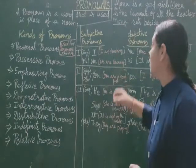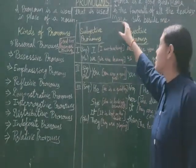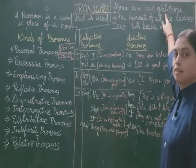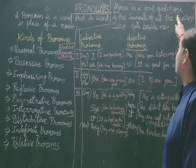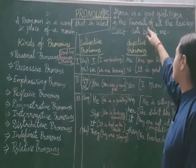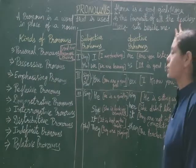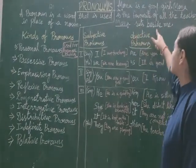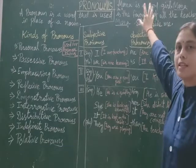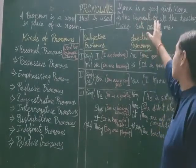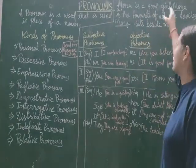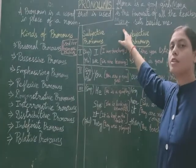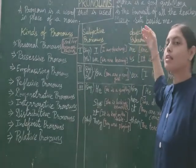For example, look at this sentence: 'Mona is a good girl. Mona is the favorite of all the teachers. Mona sits beside me.' Yeh sentence thik nahi lag raha hai kyunki hum baar baar Mona, jo noun hai, usko repeat kar rahe hai. Toh isi liye yeh achcha nahi lag raha hai.